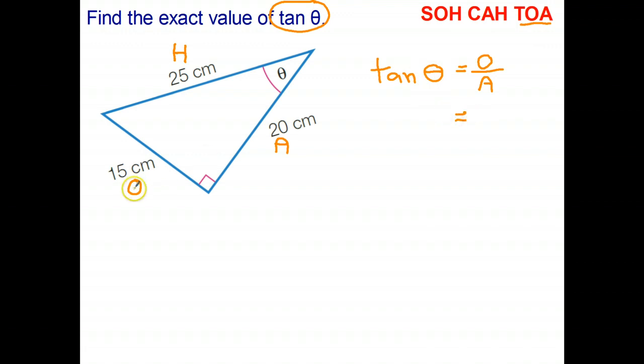We're trying to find the exact value of that, so what I have to do in place of the opposite side, I'm going to write its length which is 15. I'll put the units on at the end—in fact, I won't put the units on because it's a ratio, we don't need units. And the adjacent side is 20 centimeters, or just 20.